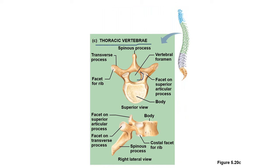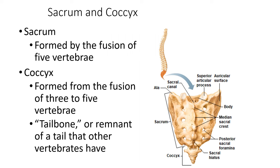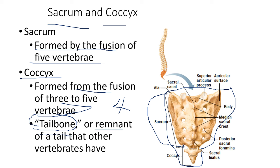The thoracic vertebrae have a structure that looks like a giraffe, and the lumbar vertebrae look like the animal moose. The sacrum is formed by the fusion of five vertebrae. The coccyx is formed by the fusion of three to five vertebrae — averaged at four — and is called the tailbone or remnant of a tail. This is our coccyx.